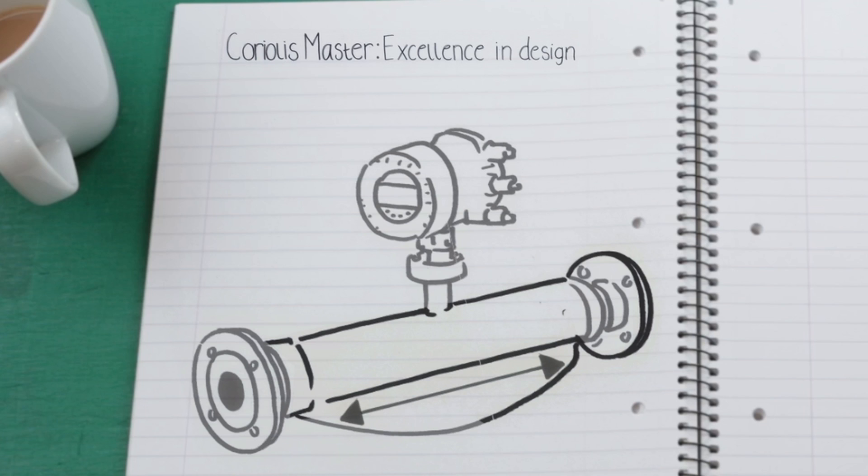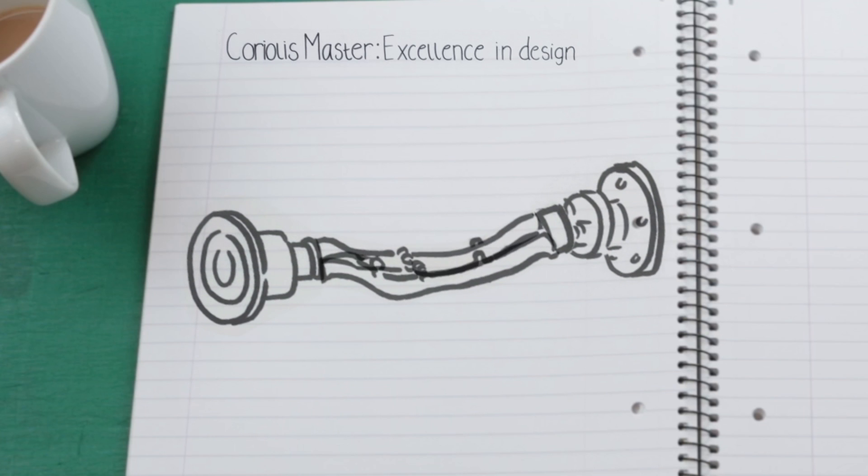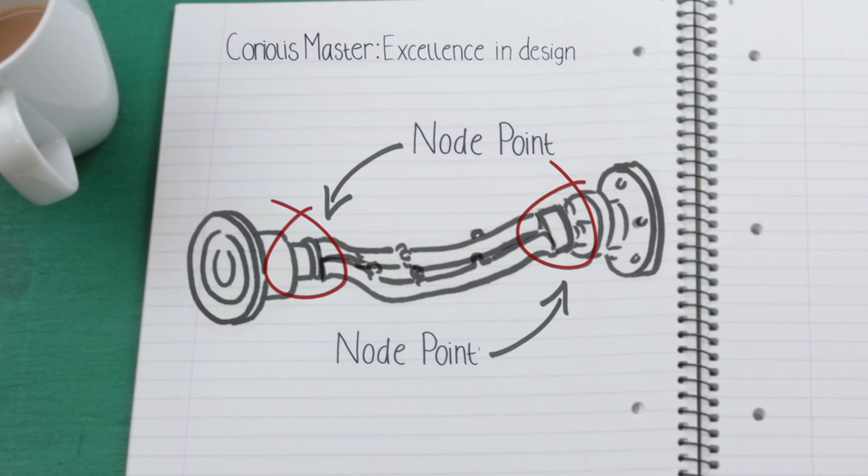The meter works by vibrating the two internal tubes with the process fluid flowing through them, using an electromagnetic actuator. The vibration and the movement of the fluid creates a small Coriolis force, causing the tubes to wobble slightly.